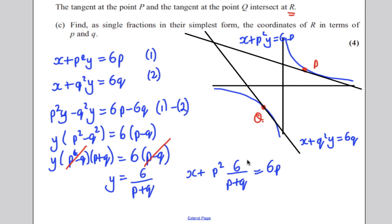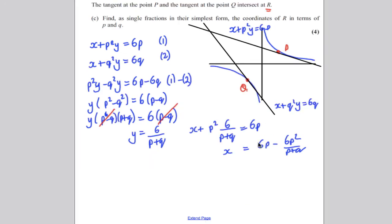And we're trying to find x here. So if you subtract this off both sides, we would have 6p - 6p²/(p + q). To subtract fractions, they need to have the same denominator. So multiply 6p on top and bottom by (p + q). So we'd have 6p(p + q) - 6p² all over (p + q).